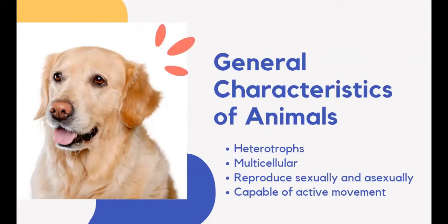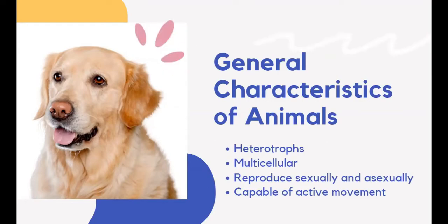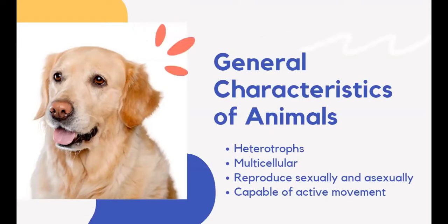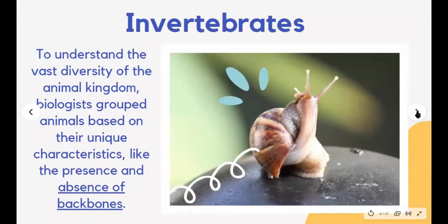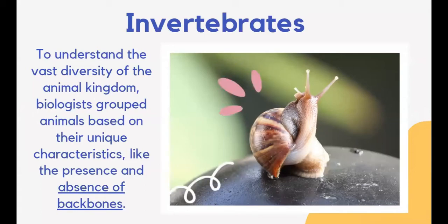Animals are also capable of active movement. The majority of animals are motile, meaning they can move around. Animals exhibit different modes of locomotion — a horse runs swiftly, a grasshopper hops, a fish swims to migrate. Some animals, like corals and sponges, are fixed in place. These kinds of animals were motile during the early stages of their lives, but in adult form they remain in a fixed position.